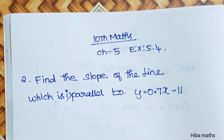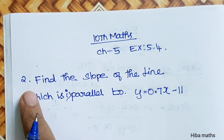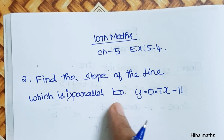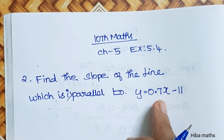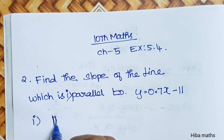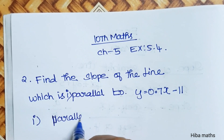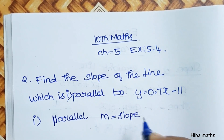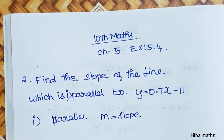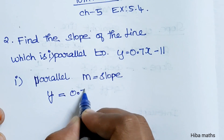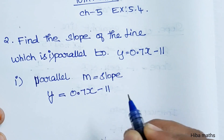Hello students! Welcome to Hibamax 10 standard, Chapter 5, exercise 5.4. Find the slope of the line. The first question is parallel to y is equal to 0.7x minus 11. So, for a line parallel to this one, the slope m is equal to 0.7.